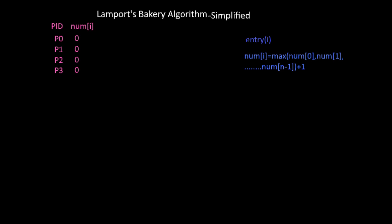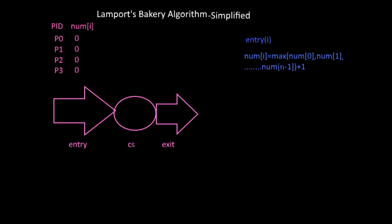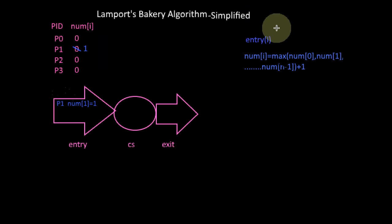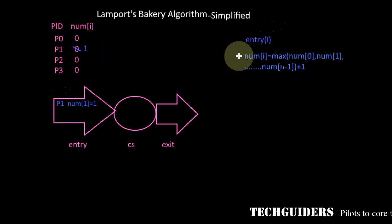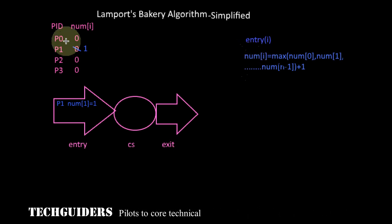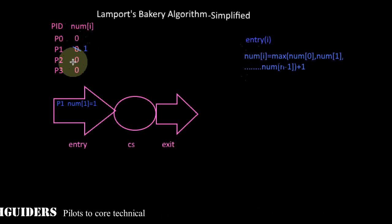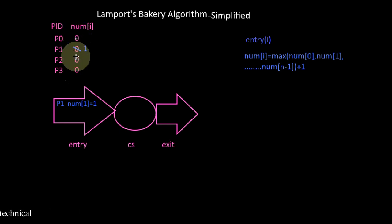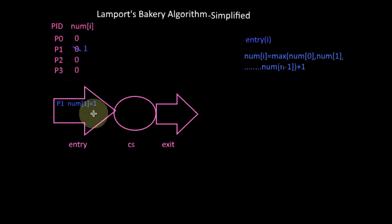For example, let process P1 need to enter the critical section. It will perform the entry section code. In the entry section code, first it will collect its number. The number is the maximum of the numbers of all the processes, which is zero, plus one. Hence the token number for process P1 is one.